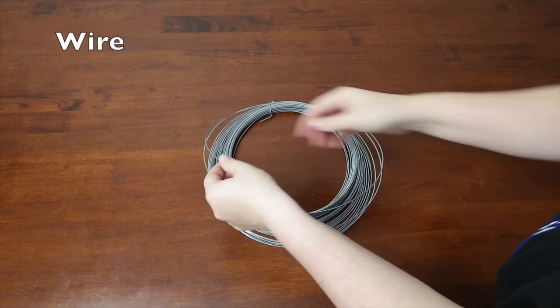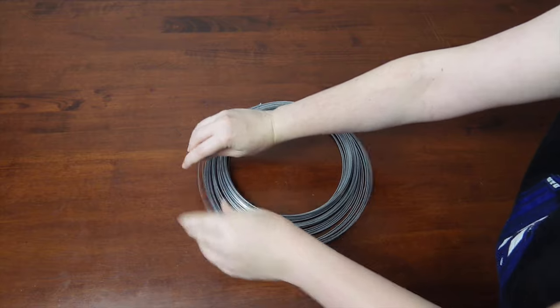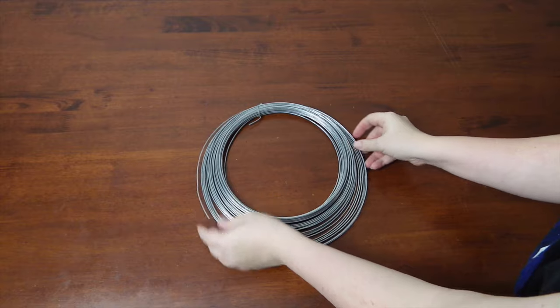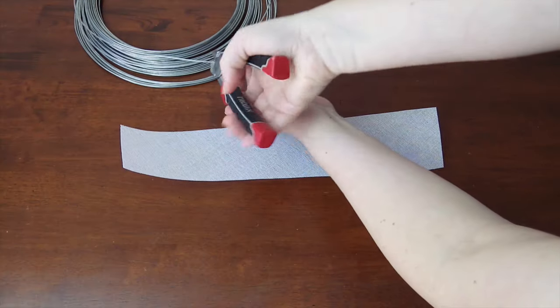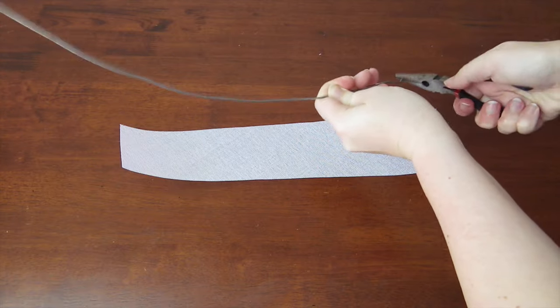And lastly, we have wire. Wire is super accessible and comes in different degrees of thicknesses. It can be used to support the edges of a garment, or to allow it to be bent into a particular shape. Wire is easy enough to work with. Cut the length that you require and seal off the edges. Here I'm bending it back on itself.